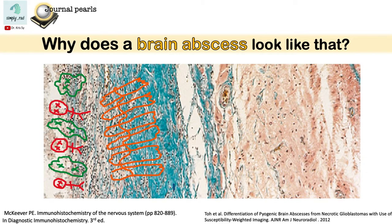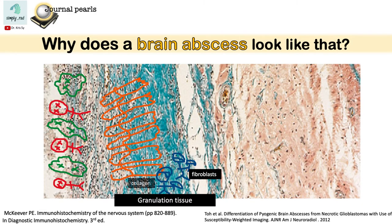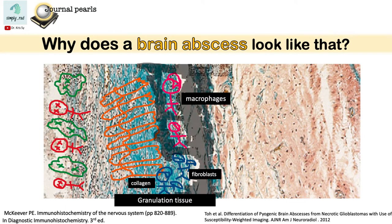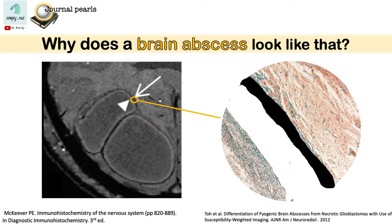Granulation tissue is composed of fibroblasts, which lay down collagen. Aside from this, there are also macrophages and other inflammatory cells. These macrophages produce free radicals, and these free radicals are paramagnetic. The paramagnetic properties of the free radicals explain why we see a hypo-intense rim on the SWI and T2 images.